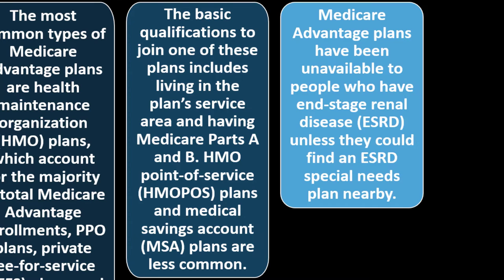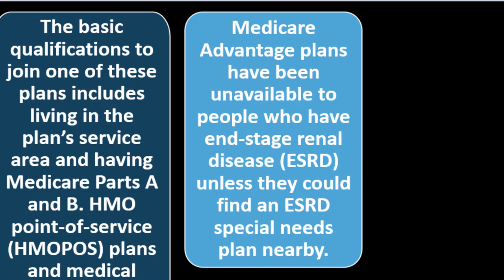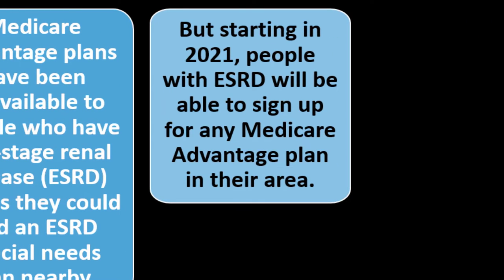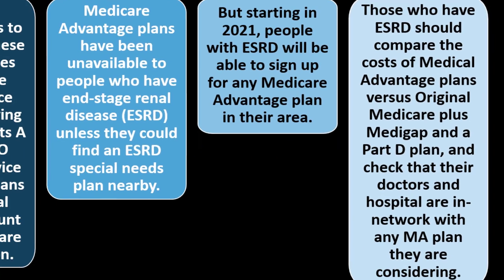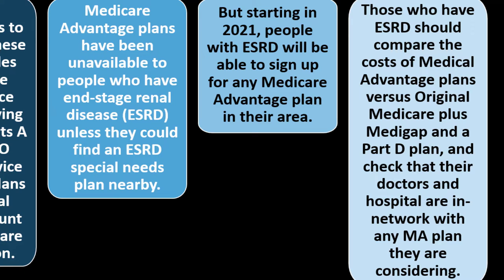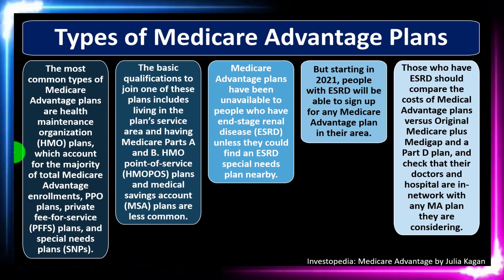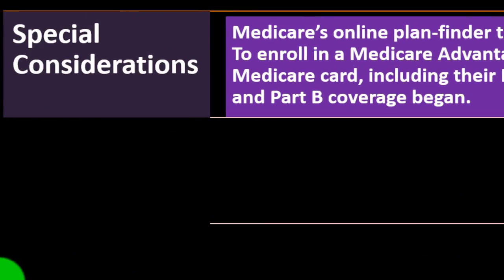Medicare Advantage plans had been unavailable to people with end-stage renal disease unless they could find an ESRD special needs plan nearby. But starting in 2021, people with ESRD are able to sign up for any Medicare Advantage plan in their area. Those with ESRD should compare the costs of Medicare Advantage plans versus original Medicare plus Medigap and a Part D plan, and check that their doctors and hospitals are in-network with any Medicare Advantage plan they are considering.